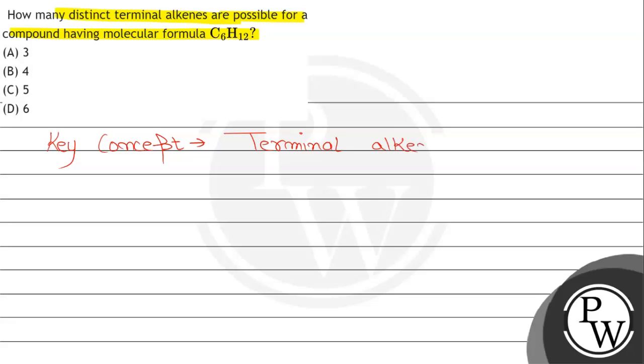We are going to draw terminal alkenes for C6H12. The first structure is CH3-CH2-CH2-CH2-CH=CH2. The second structure is CH3-CH(CH3)-CH2-CH=CH2.